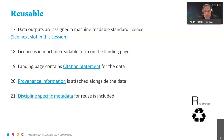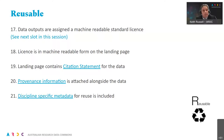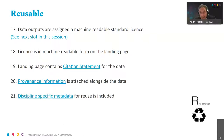The last letter in FAIR stands for Reusable, and it contains the other elements not yet listed under F, A, and I. Together, all of those elements make sure that the data is actually reusable down the track. The first thing listed here is that data output should be assigned a machine-readable standard license — I'll speak about that in more detail shortly under data licensing. That license should be in machine-readable form on the landing page so that a machine can find and understand what it can do with that data.